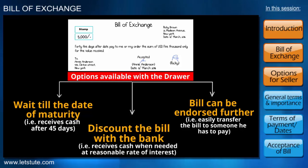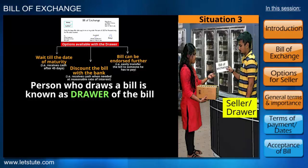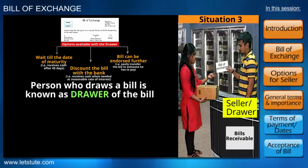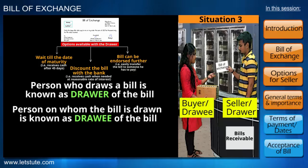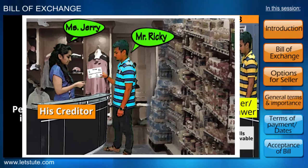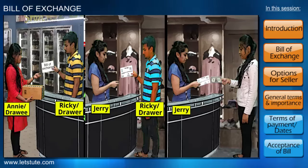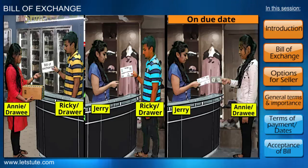Let's understand it through an example. Mr. Ricky is the seller and also the drawer of the bill. Since he is going to receive cash, for him this instrument is bills receivable. Miss Annie is the buyer and also the drawee of the bill. Since she is going to pay cash, for her this instrument is bills payable. Now if Ricky needs to pay his creditor Miss Jerry, he can endorse or pass on the same bill — drawn on Miss Annie — to Miss Jerry. On the due date, Miss Annie will directly pay Miss Jerry. The person to whom the bill is to be paid is known as the payee of the bill.